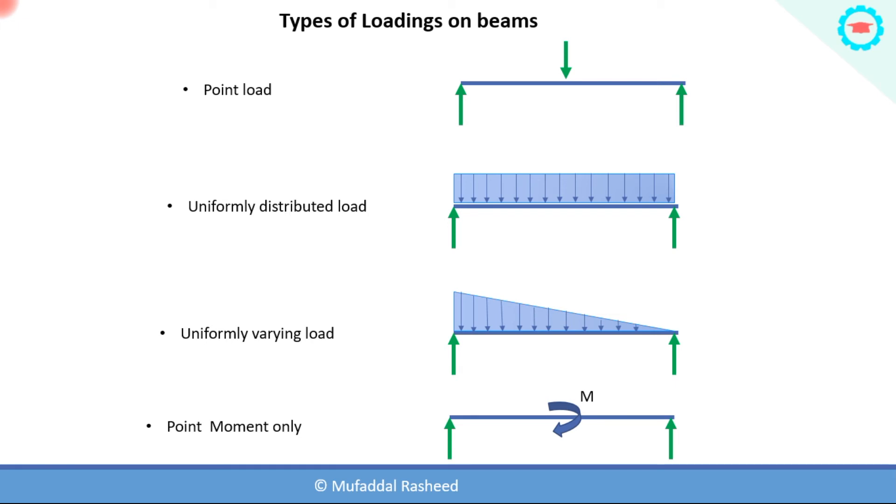An example of a uniformly distributed load can be any pressure which is acting on the beam. That pressure is distributed along the area and hence it is uniform.